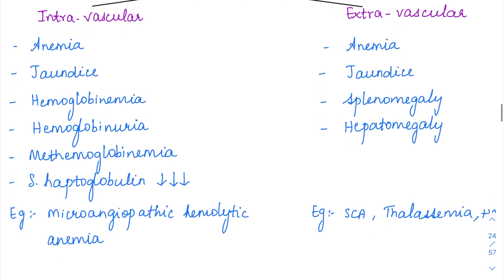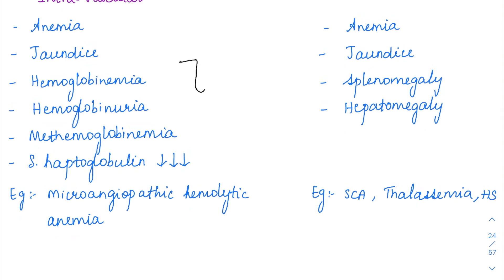The hemoglobin is excreted in urine, causing hemoglobinuria. There is also a protein in circulation called serum haptoglobin, whose function is to take up free hemoglobin lying in the circulation. As hemoglobin increases in intravascular hemolysis, the serum haptoglobin takes it up and gets consumed, so serum haptoglobin levels go down. These four features — hemoglobinemia, methemoglobinemia, hemoglobinuria, and decreased serum haptoglobin — are specific for intravascular hemolysis.